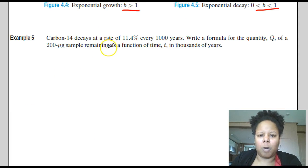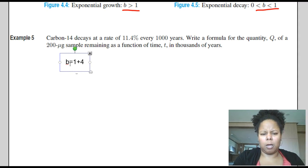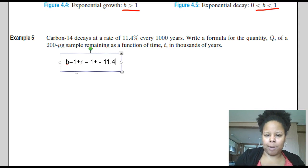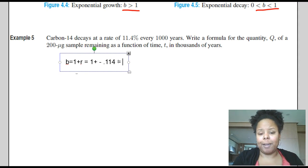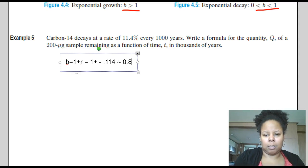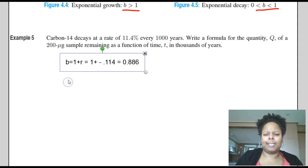So let's take a look at an example of how we would compute this. Here's an example from your book. Carbon-14 decays at a rate of 11.4 percent every year. We write a formula for the quantity of a 200 microgram sample remaining as a function of time. So if I look at it, it decays at a rate. So that means for my B, my B is going to be equal to one plus R. In this case, R is a negative number. So it's going to be one plus negative 11.4 percent. So I write 11.4 percent as a decimal as 0.114. And when I do that, I get that my B value or my decay rate is going to be 0.886. That's our decay rate.